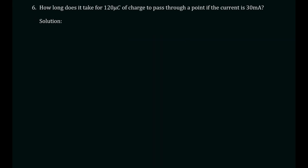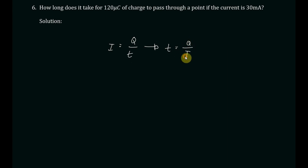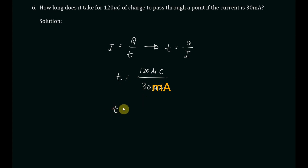Problem number six: how long does it take for 120 microcoulombs of charge to pass through a point if the current is 30 milliamperes? From I equals Q over t, rearranging gives t equals Q divided by I. Substituting: t equals 120 microcoulombs divided by 30 milliamperes, giving a time of 0.004 seconds, or 4 milliseconds.